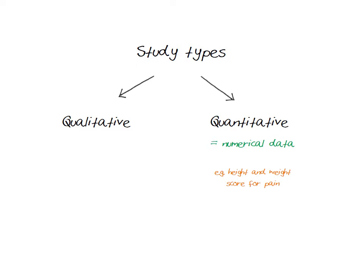Measures of height or weight are examples of numerical data. Data collected from scales that produce a score are also quantitative — for example, scales for the level of perceived pain. It's not what you are measuring, such as something objective or subjective, that determines whether your data is quantitative or qualitative, but whether or not your results are produced as numbers.